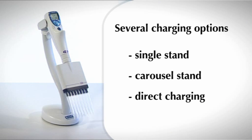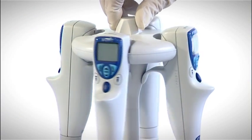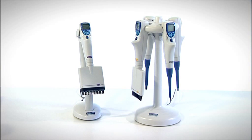When you are not pipetting, store your E-Line in the charging stand. This will keep it clean and ready for use at all times. The compact charging carousel is ideal for saving bench space. There are also single stands available.